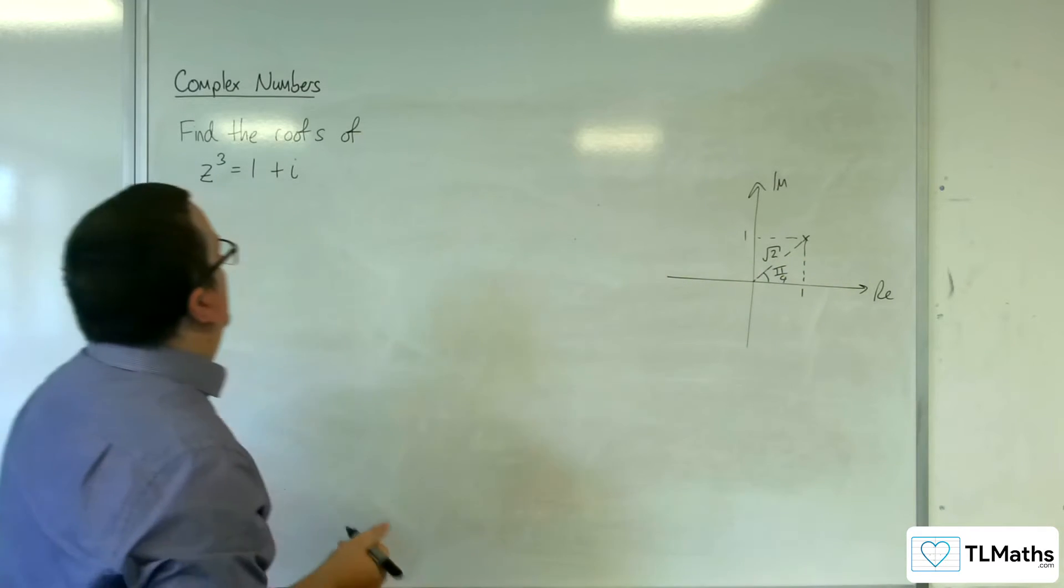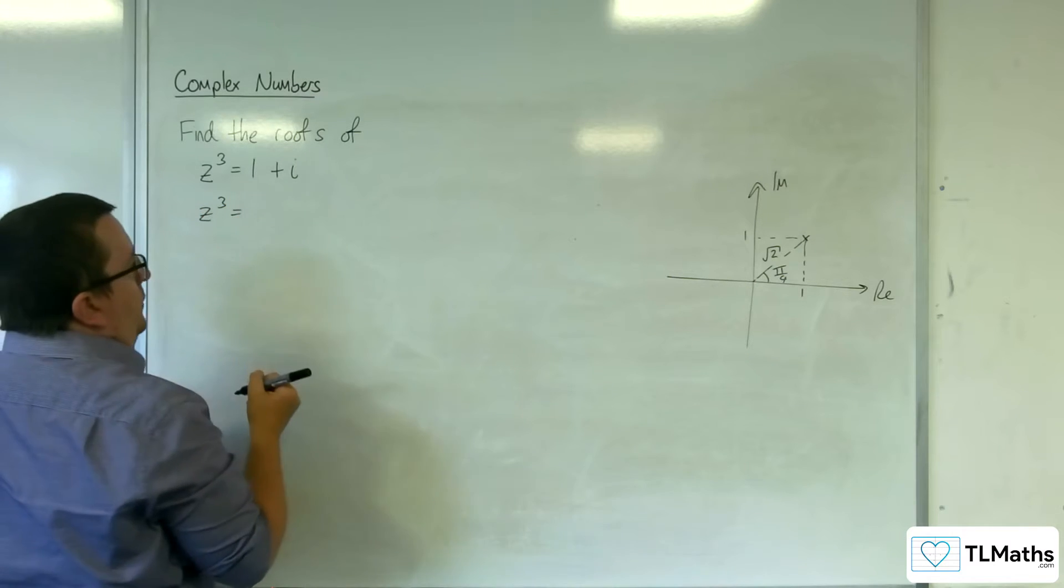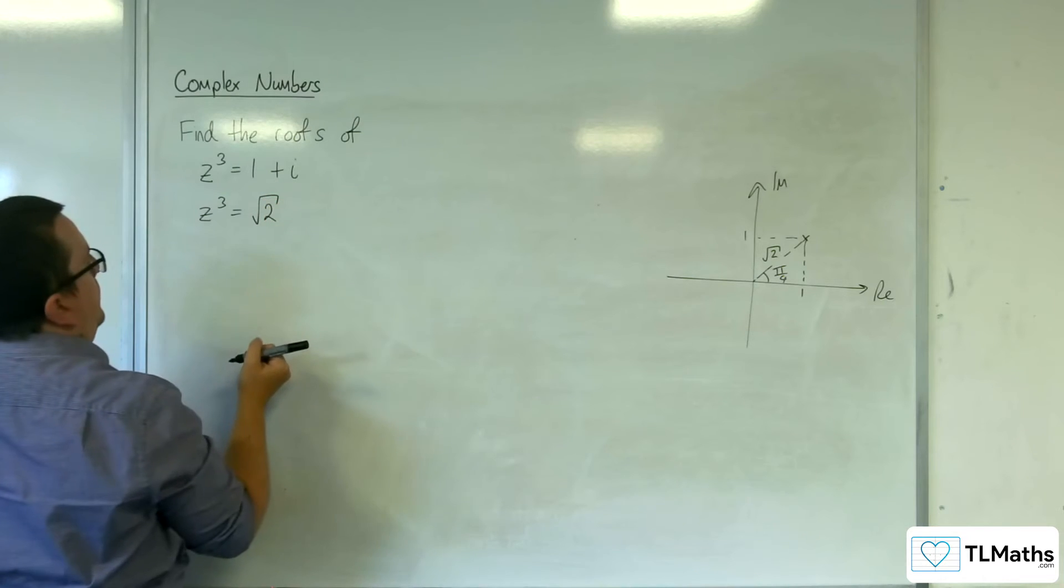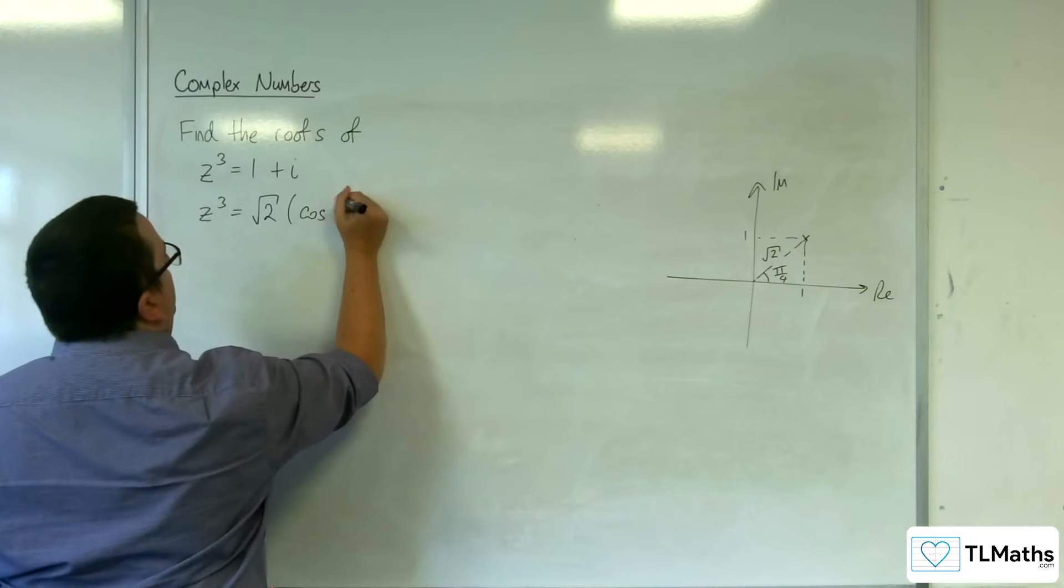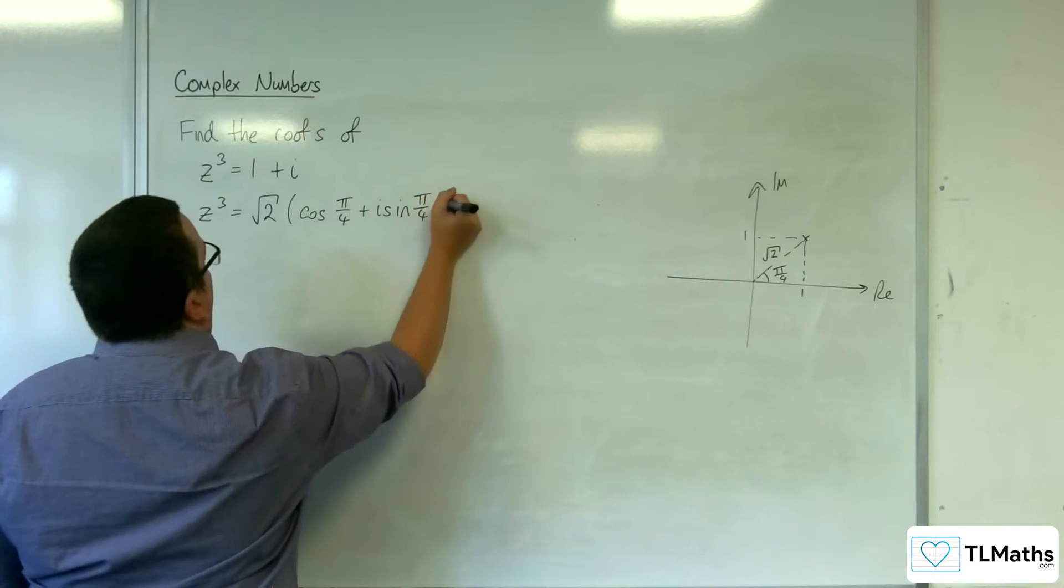So we can say that z cubed is equal to root 2 times cosine of pi over 4 plus i sine pi over 4.